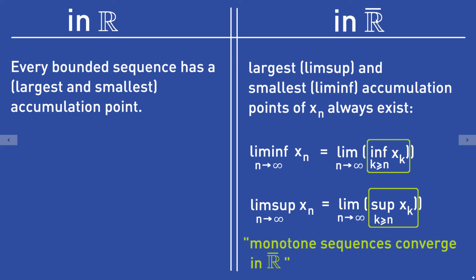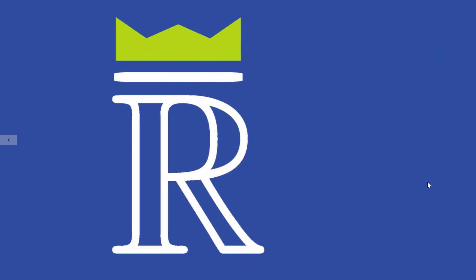To sum it up: in the extended real numbers, the largest and the smallest accumulation points of a sequence Xn always exist, and are given by the limit inferior and limit superior. In ℝ, we need the condition that the sequence is bounded for an accumulation point to exist. In the extended real numbers, we can always write down the largest and smallest accumulation points. I hope this video showed you that it is sometimes a good idea to consider the extended real numbers instead of the normal real numbers. If you liked this video, please consider subscribing to my channel.